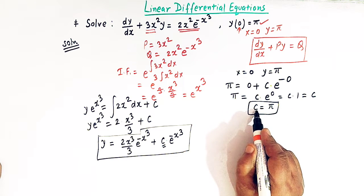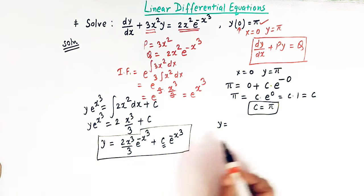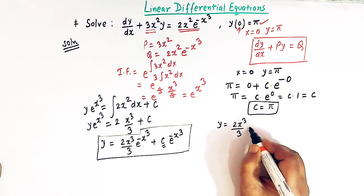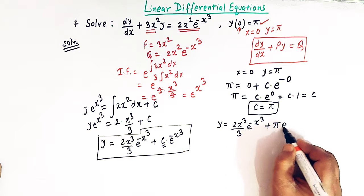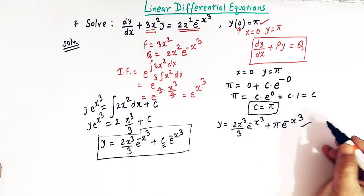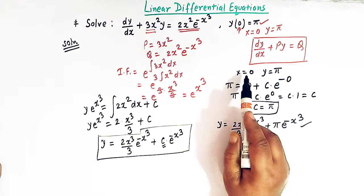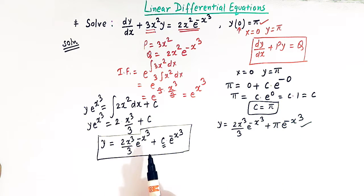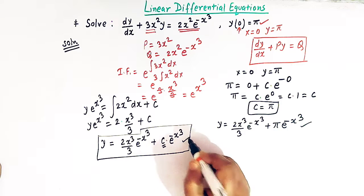Taking c = π, the particular solution is y = (2x³/3) e^(−x³) + π e^(−x³). This is the particular solution given the conditions x = 0 and y = π, while the general solution is given by the expression with arbitrary constant c.